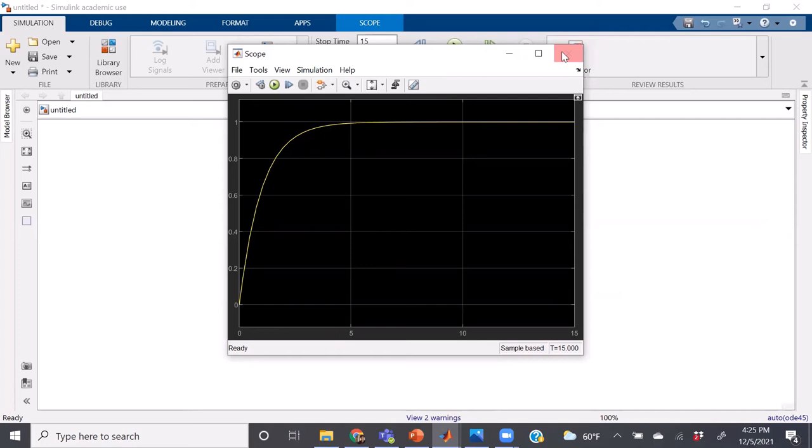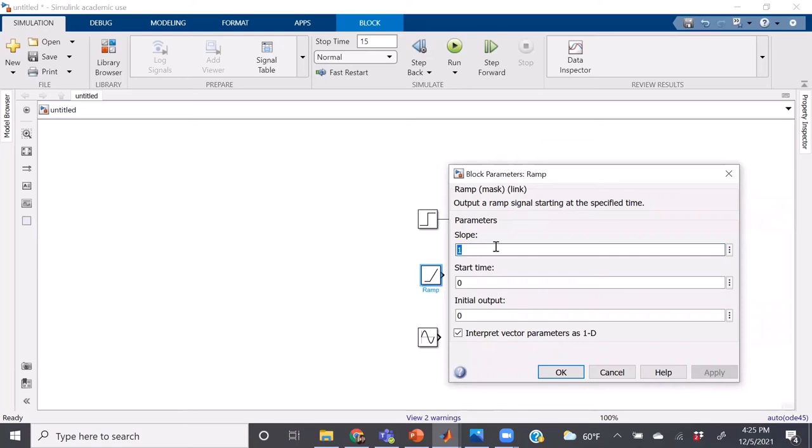Now for the other inputs, double click ramp. It'll just ask you to change the slope, the start time, and the initial output.